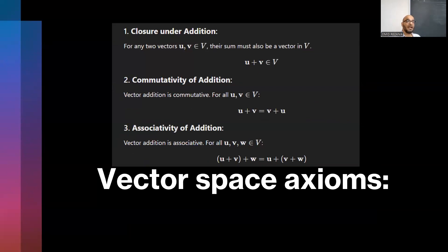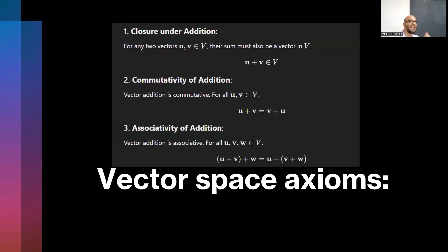I'm going to talk very briefly about these eight axioms. These axioms are important for the assessment. The first property: if we call a space a vector space, it has to have eight properties. The first property is closure on addition — it means that if you have two vectors u and v which belong to that space, you add them together, and the resulting addition is also a component within that vector space.